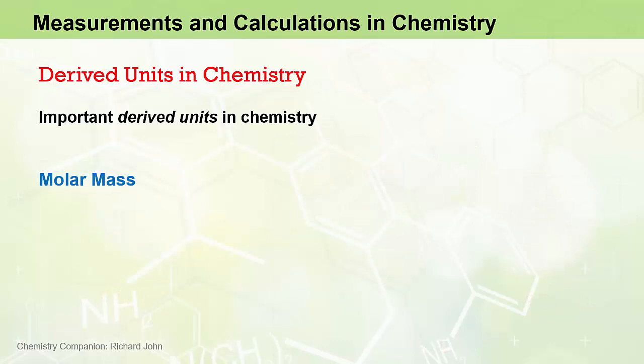Molar mass is a very important derived unit used in chemistry, and this relationship here, molar mass equals mass over moles, is probably the most important relationship in chemistry. What it actually does is relate the mass of a substance in grams to the amount of that substance in moles.